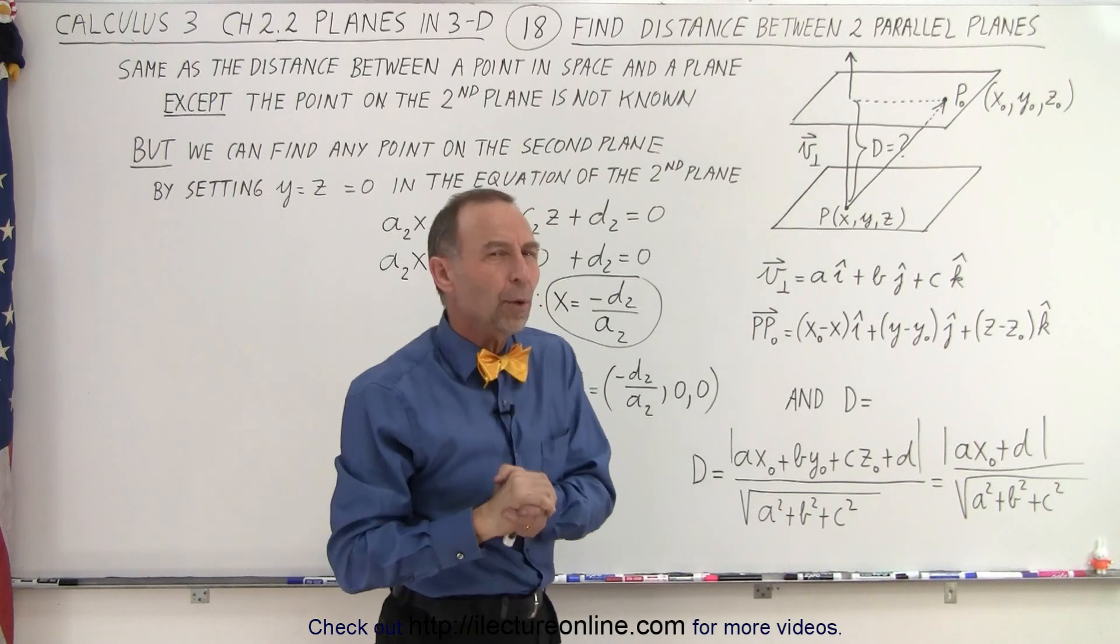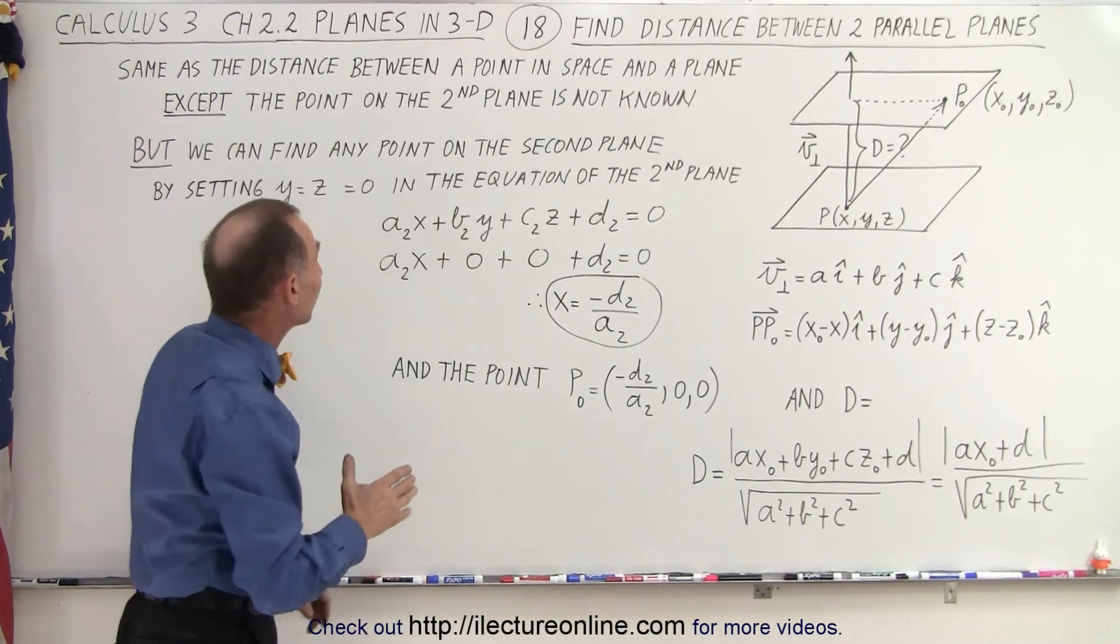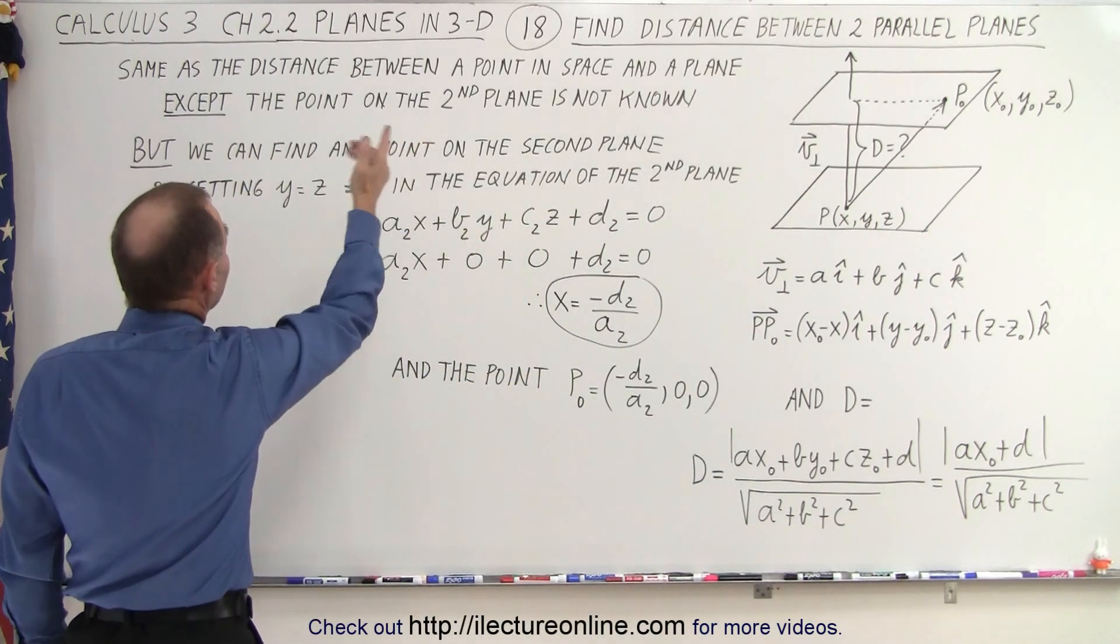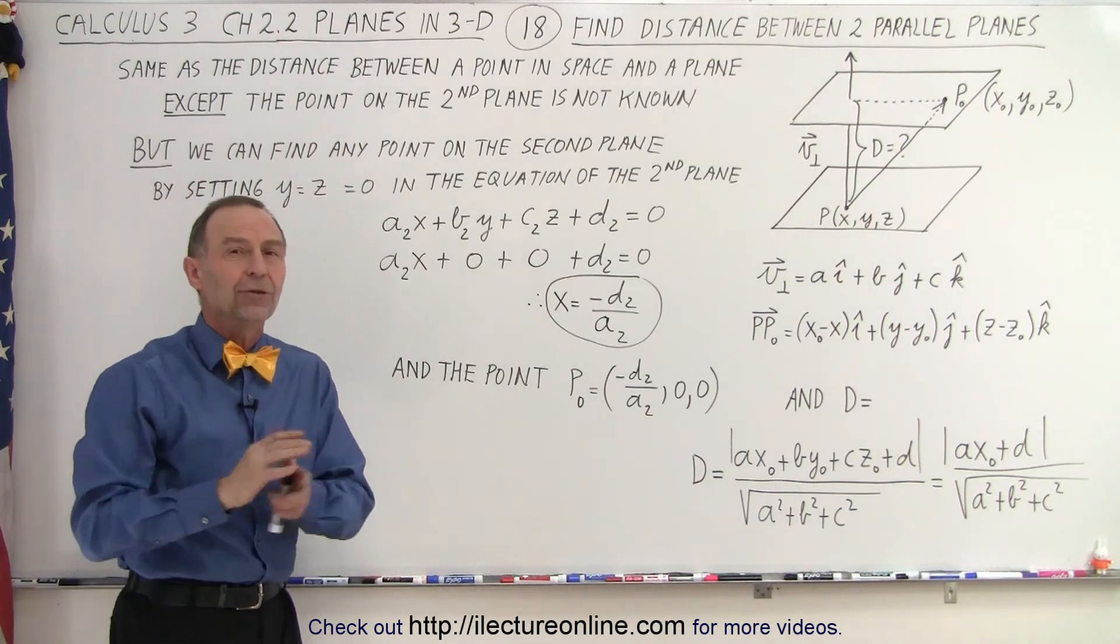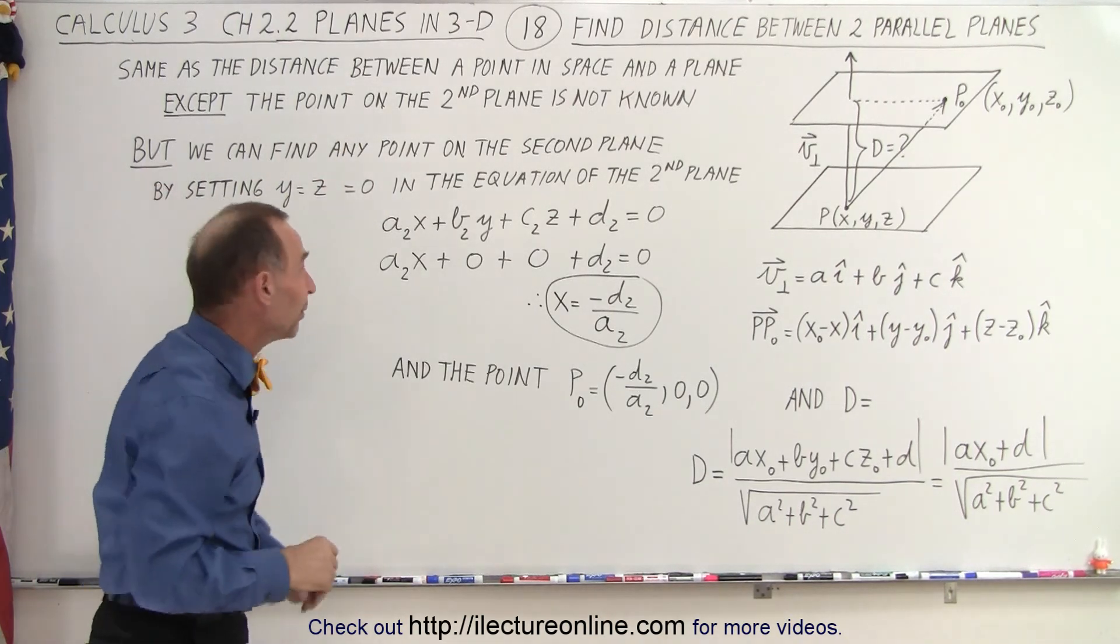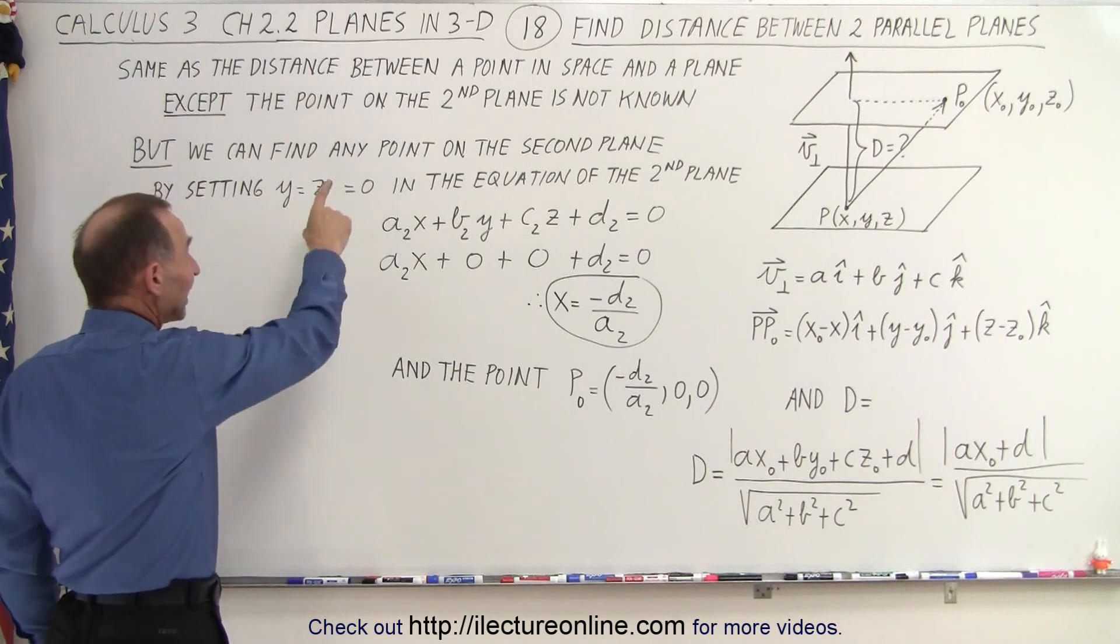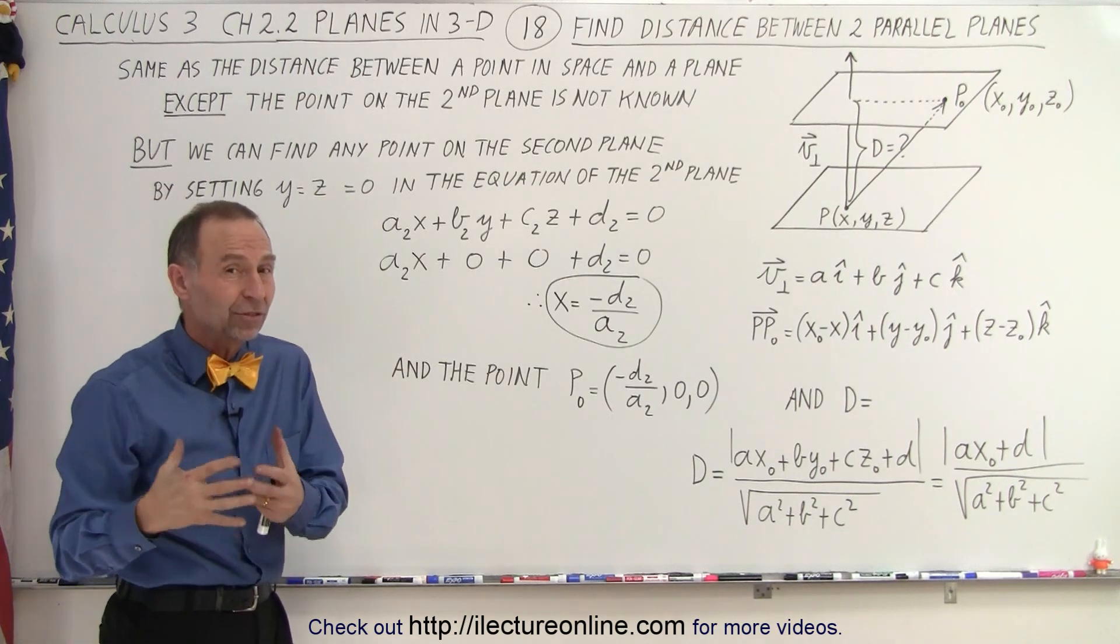But then we don't know what that point is, and that's the big difference. So the approach is the same, except the point on the second plane is not known. So how do we get around that problem?